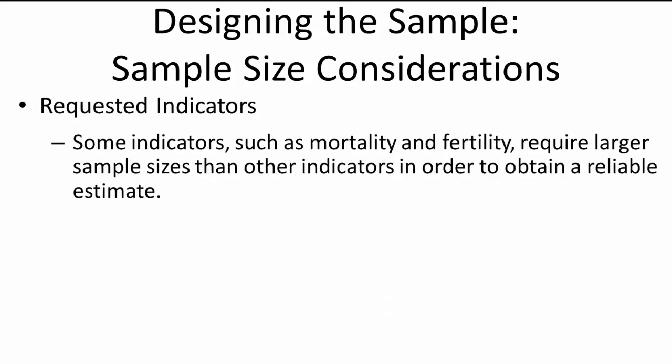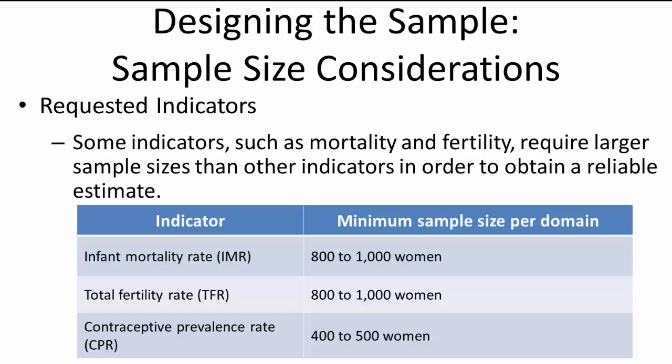Sample sizes at the DHS are large, in the thousands, which allows us to produce estimates for indicators that we can be confident in. Some requested indicators, such as mortality and fertility, require large sample sizes in order to obtain reliable estimates. This table shows the minimum sample sizes for some basic indicators — the numbers required to achieve a reasonable level of accuracy. If sample sizes are lower than those indicated in the table, the level of accuracy is reduced and the confidence intervals are larger. The numbers in this table are the minimum sample size per sampling domain.